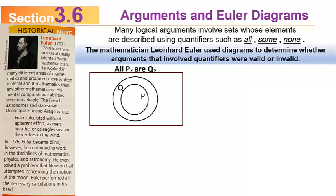For example, the statement 'all P's are Q's' can be illustrated by a Venn diagram where the circle P is entirely contained inside the circle Q. You think of a dot inside the P circle as a representative element in P, and you can see that if it's in P, it also has to be in Q. So you can see how helpful these diagrams can be.